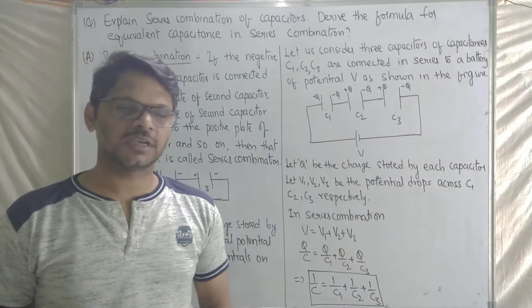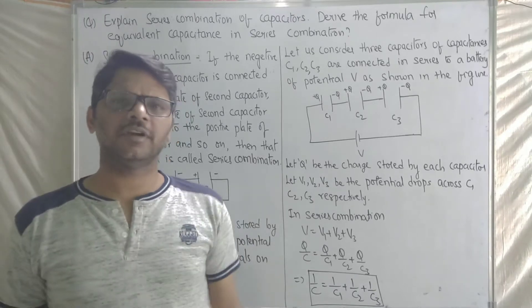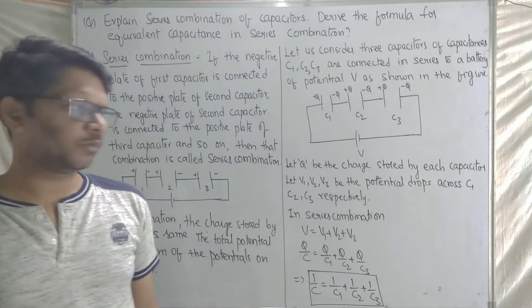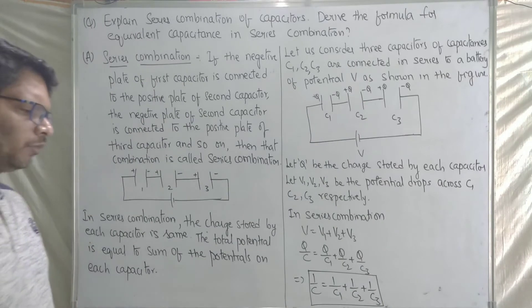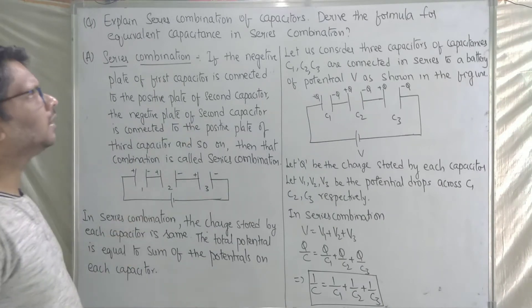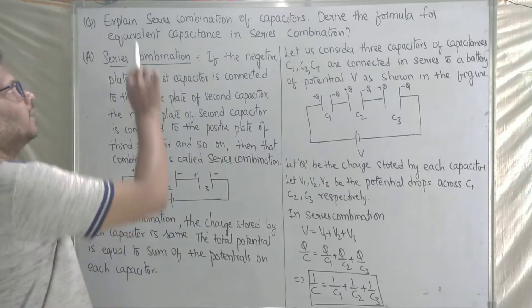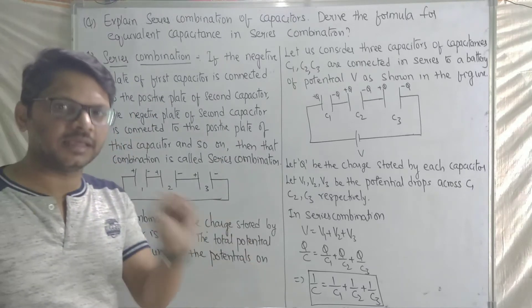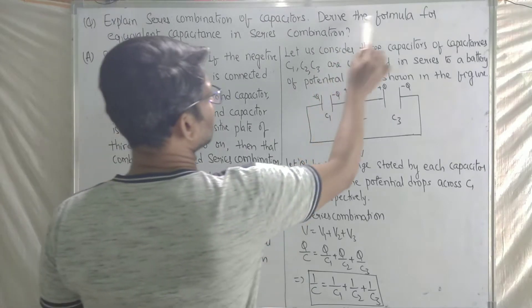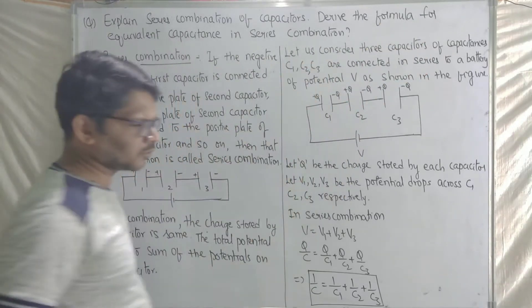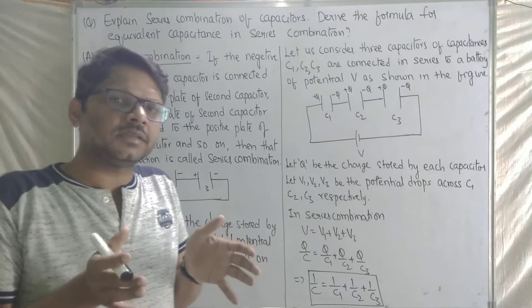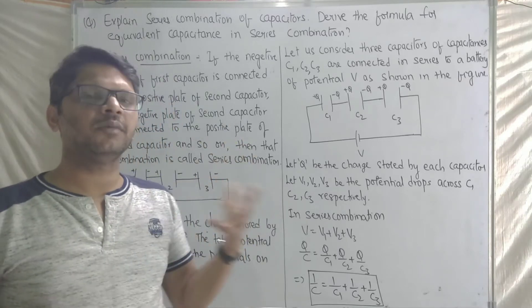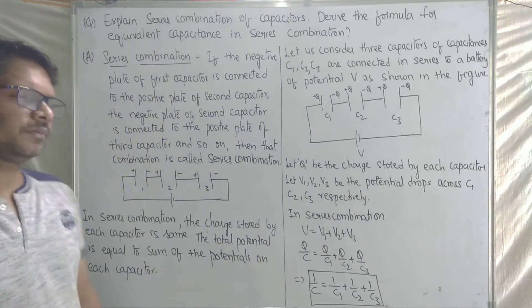Hi students, welcome to the channel Physics with Kiran Kumar. In the 'Physics is Simplified' series, in the topic of electric potential and capacitance, we are discussing important questions. This is the third important question, following two already discussed. The question is: explain series combination of capacitors and derive the formula for equivalent capacitance in series combination.